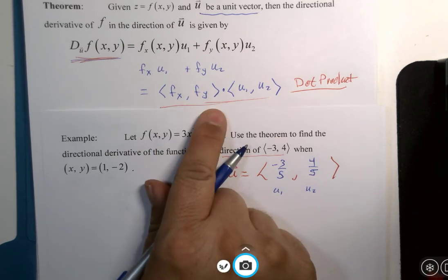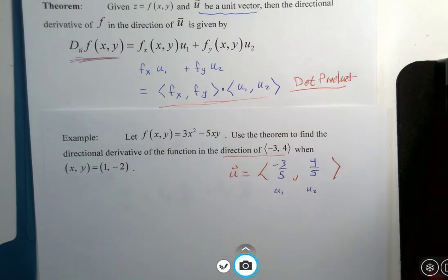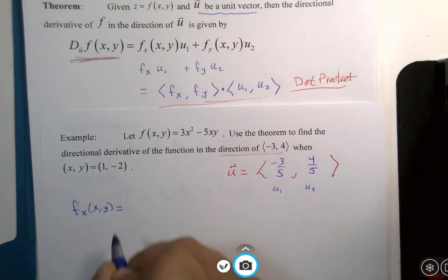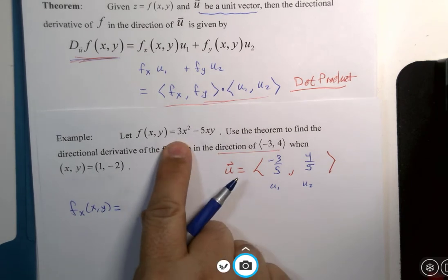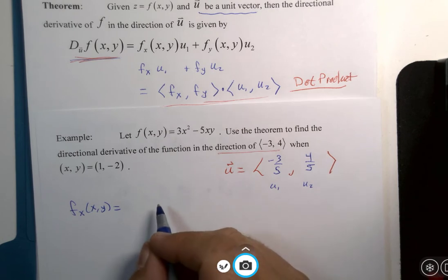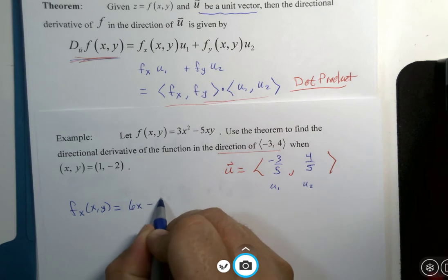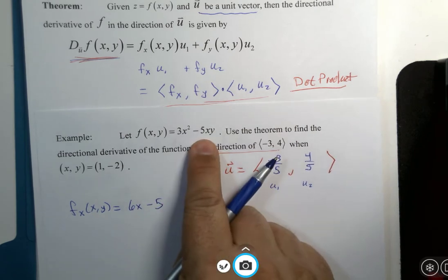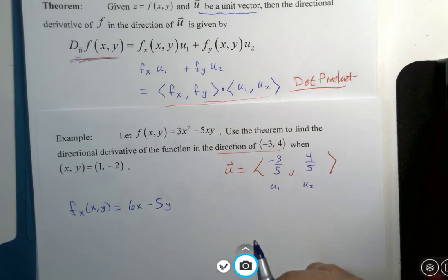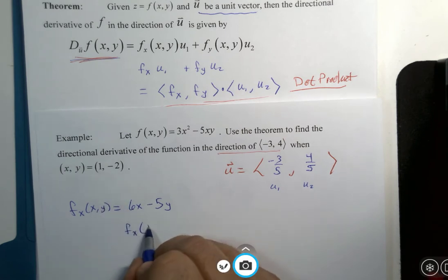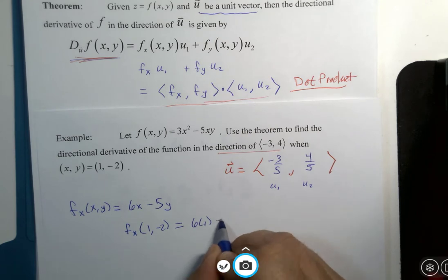We need the partial derivatives. So I need the x partial derivative of the function, which was 6x, well, not was, because we haven't done this yet. It is 6x minus 5, oh, if x is the variable derivative, x is 1 minus 5y. And then if I were to use the coordinates of my point, 1 and negative 2 here, 6 multiplied by 1 minus 5 times negative 2, that would be 16.